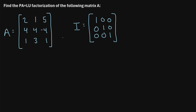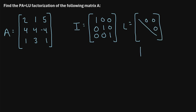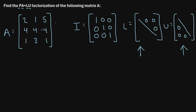A is just the original matrix that we start with. L is the lower triangular matrix — that's a matrix where the values above the main diagonal are all zero. And U stands for the upper triangular matrix, where all the values below the main diagonal are equal to zero.